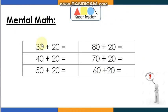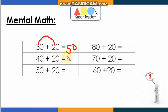Mental math time! What I want you to do is add these numbers together. We'll add the first digit and then add the zero. Let's do the first one: 3 plus 2 equals 5, then add the zero — 30 plus 20 equals 50. Now 40 plus 20: 4 plus 2 equals 6, so 40 plus 20 equals 60. Excellent!